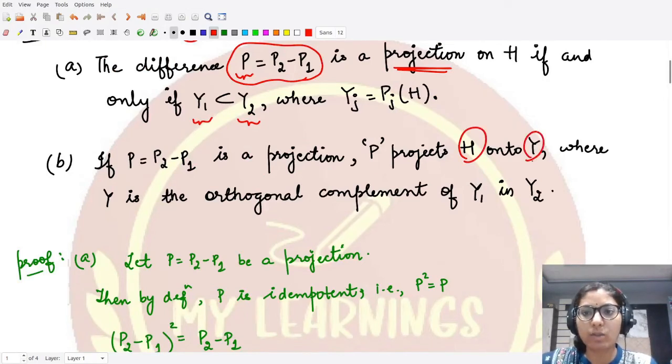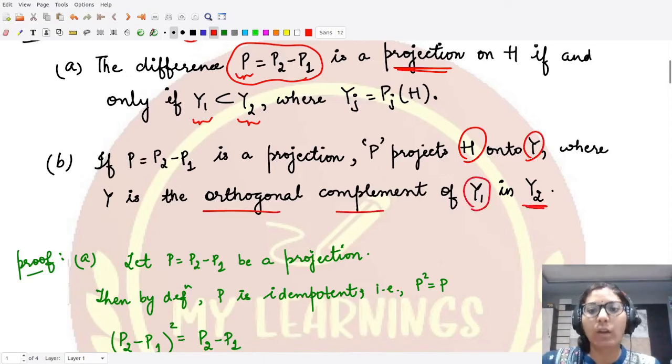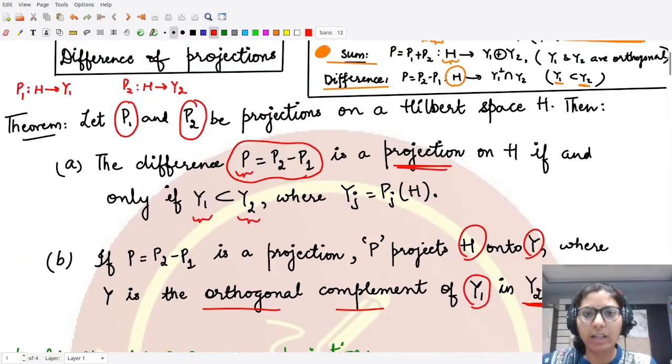This P, as a projection, whenever it projects the whole Hilbert space onto Y—in this case what is this Y? This Y is the orthogonal complement of Y1 in Y2, so that means it could be written something like this: Y is the orthogonal complement of Y1 in Y2, which means we could take the intersection of Y1 complement with Y2, because the whole of Y1 is a member of Y2.